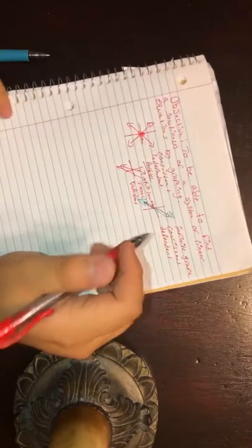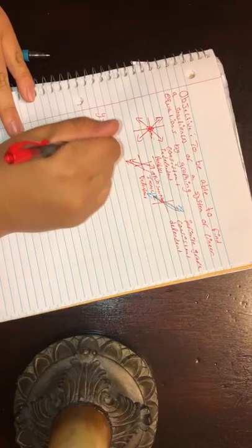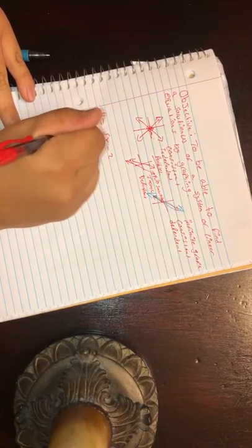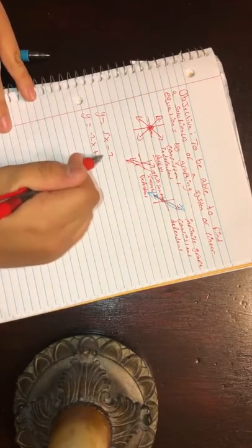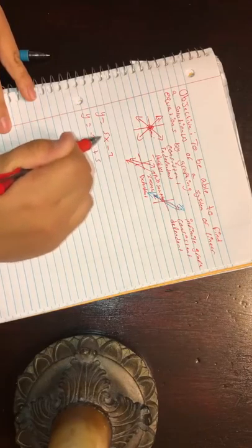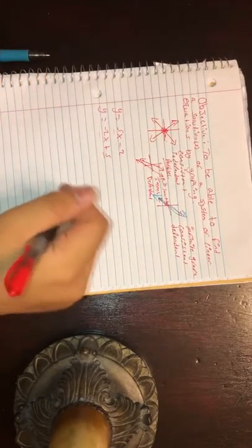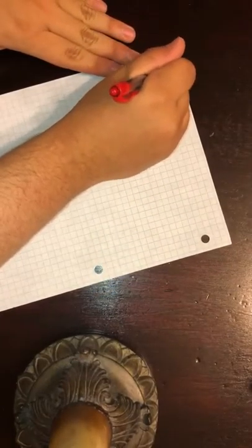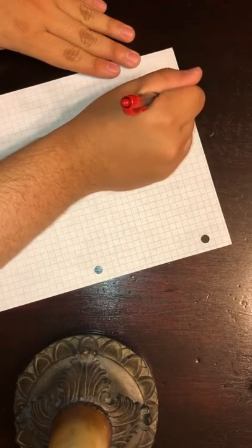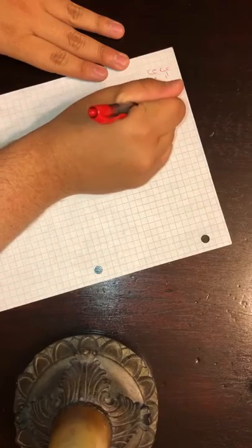So to get into these for some practice problems, we can put down a system of equations where it would be y equals 5x minus 2 and y equals negative 2x plus 5. Now, just looking at it, we know there's going to be a solution because they have different slopes and different y-intercepts, proving that there's going to be an intersecting point. We'll just get some graph paper to do it just so it can be a bit more accurate.